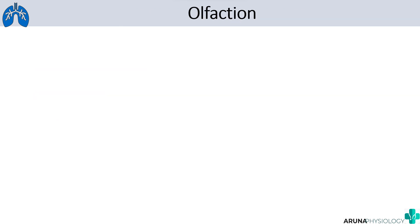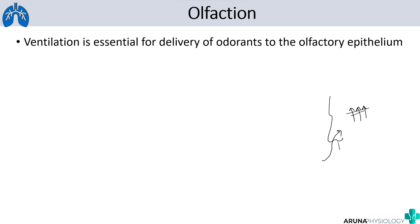The first point is olfaction — the sense of smell. In order to smell something we should first breathe in the air, so it can reach the olfactory receptors present on the upper part of the roof of the nasal cavity. Ventilation is essential for the delivery of odorants to the olfactory epithelium. That is the first function: olfaction.